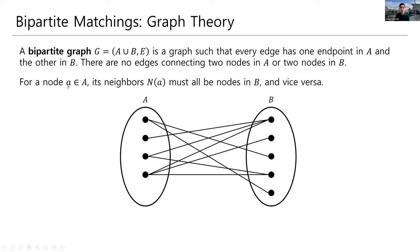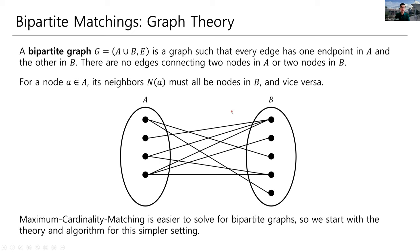So a thing to notice about these graphs is whenever we look at a node little a in A, so say this top node here, then its neighbors, denoted by capital N of A, are all in B, right? Any neighbors that could possibly have must be on the other side because there are no edges between nodes in A. Likewise, for any node in B, all of its neighbors must be in A. It turns out that maximum cardinality matching is easier to solve in a bipartite graph than it is in general. So just to build some intuition, we're going to start off by studying this problem in this simpler setting.